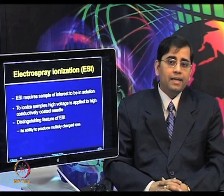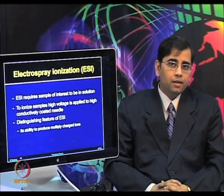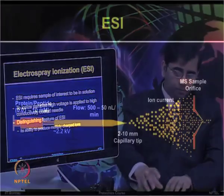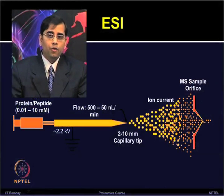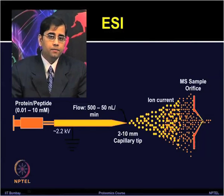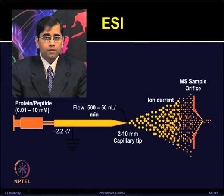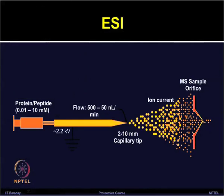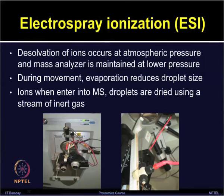Here you can get an overview of the process involved in electrospray ionization. Small droplets of solution are generated by the Taylor cone, which contains the peptide analyte. Protons from the acidic solution provide the droplets with a positive charge, so they can move from the needle to the negatively charged instrument. In ESI, the desolvation of ions occurs at atmospheric pressure, and the mass analyzer is maintained at lower pressure so that ions can be drawn into the MS based on the pressure differential.